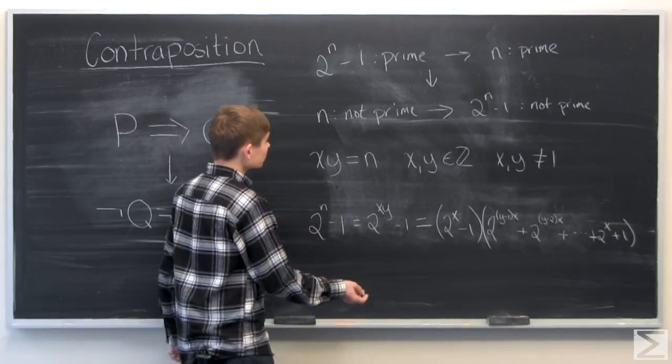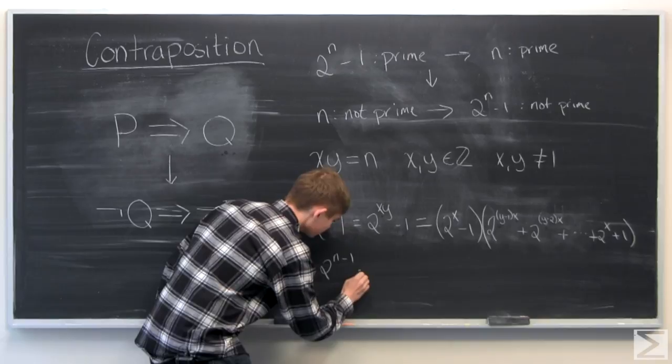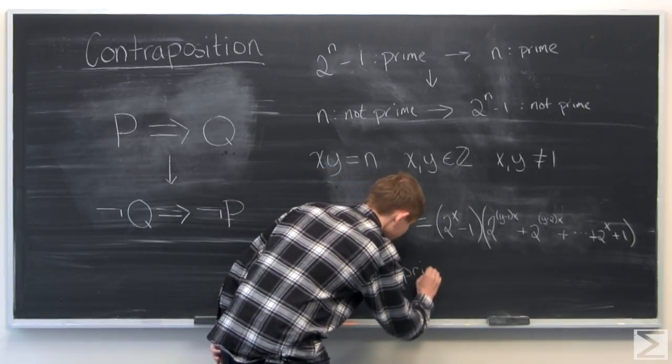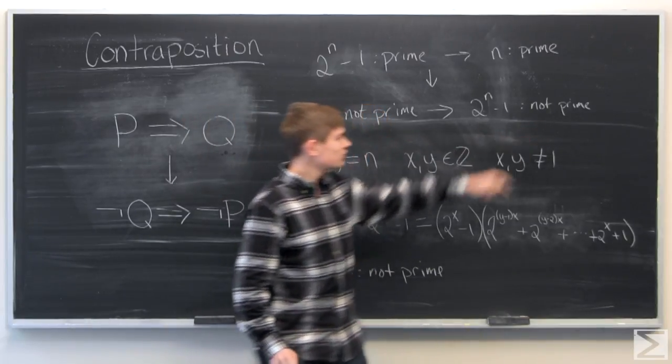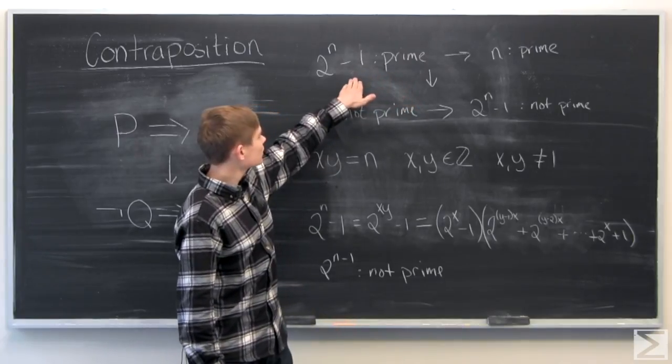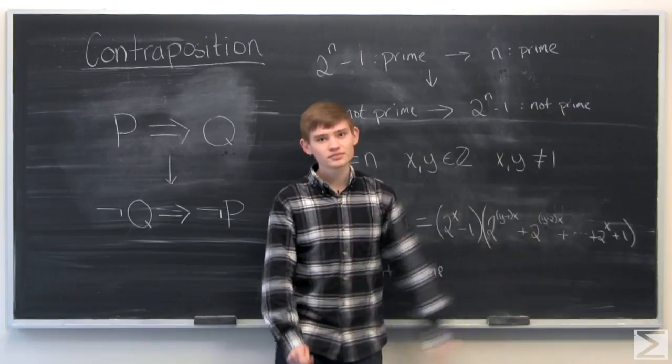So therefore, we've factored this into two integers which are not equal to 1, and therefore we've shown that 2 to the n minus 1 is not prime, which is what we want to show here. And since it's contraposition, we've therefore shown that 2 to the n minus 1 is prime implies that n is prime.